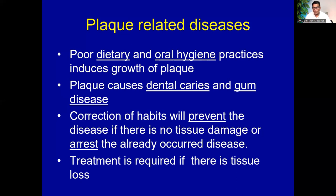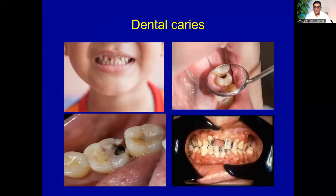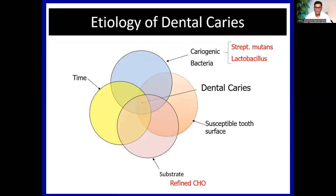Dental caries is the first disease I will describe. Most of our population has dental caries. For dental caries to occur, there should be four things: a susceptible tooth surface, a substrate — mainly refined carbohydrates and sugar — cariogenic bacteria, mainly Streptococcus mutans and Lactobacilli, and time. These three things should be in contact for a significant amount of time for caries to take place.